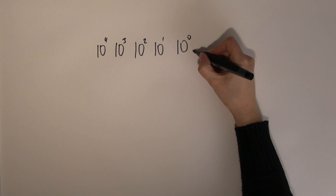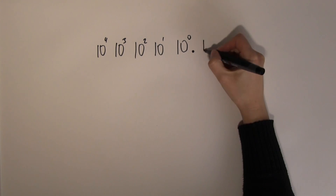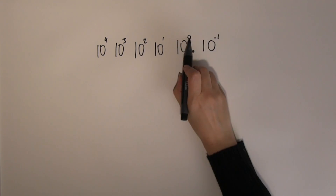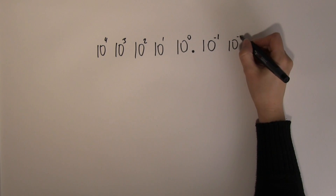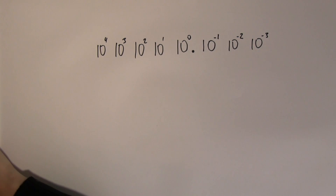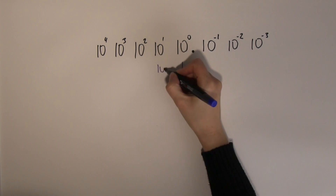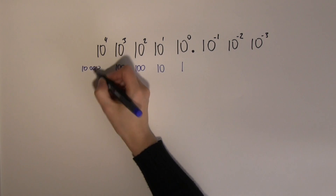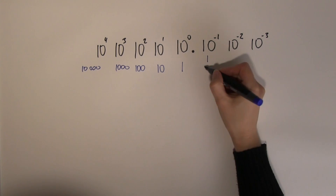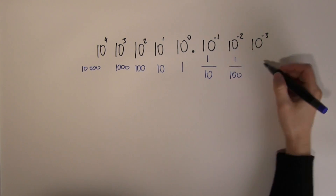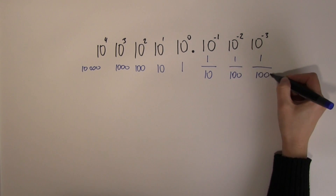When we introduce the decimal point, we can further extend the place value table to ten to the minus one, ten to the minus two, ten to the minus three, and so on. In numeric terms, that gives us one, ten, hundred, thousand, and ten thousand on the left, and one over ten, one over hundred, and one over a thousand on the right.